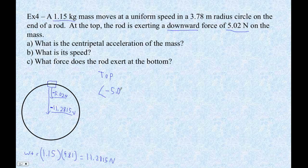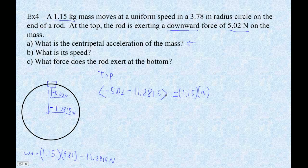So we go minus 5.02 minus 11.2815 — those are all the forces — and that equals 1.15 times the acceleration. We don't know the acceleration, so we can find it. Going minus 5.02 minus 11.2815, divided by 1.15, I get the acceleration is negative 14.175 meters per second squared.